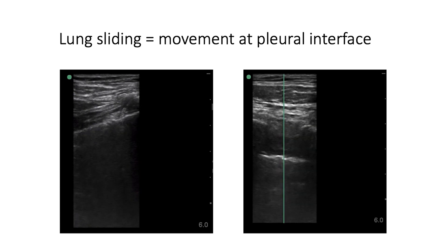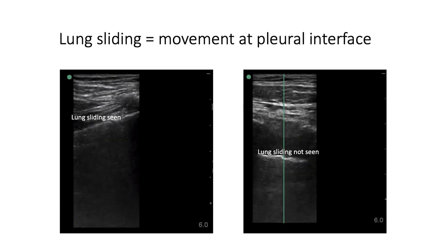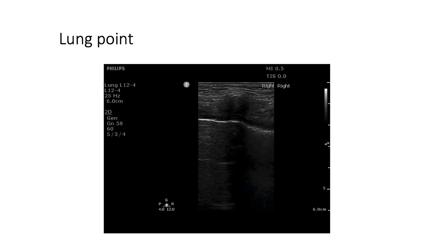Lung sliding is an important feature to look for. It occurs due to opposition and movement at the pleural interface. In the image to the left, we do see lung sliding occurring. In the image to the right, we do not — meaning the visceral pleura is not moving along the parietal pleura. This can occur due to pneumothorax, but it's not specific for pneumothorax. It can also occur due to hypoventilation such as breath holding or mainstem intubation of the opposite lung, pleurodesis, or COPD with large blebs. Though absence of lung sliding is not specific for pneumothorax, lung point is. This image shows a lung point with an area of lung sliding, an area of absent lung sliding, and the junction of the two — which is the lung point.